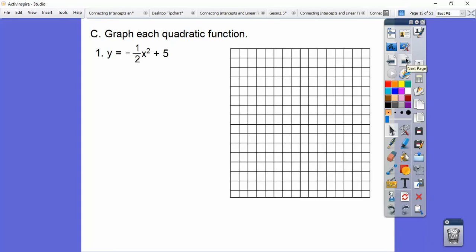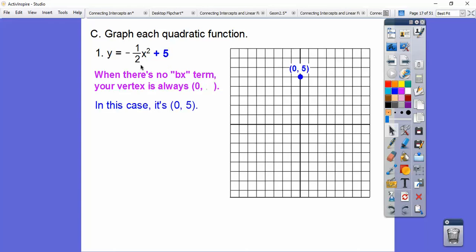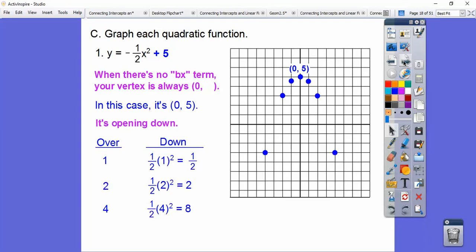So let's graph these guys. This one here, this one's in the form of y equals, well, there's no bx in there, so we know that x equals 0 for our vertex, so it's somewhere on this y axis right here. Where on the y axis? It's right there at that plus 5. And this is going down, so it's going down 1 half of 1 squared, 1 half of 2 squared, 1 half of 3 squared, and so on, and so I did that, and then just trace your parabola out right there.